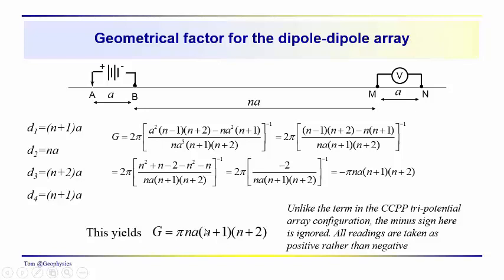And this yields a geometrical factor that you'll see in some texts. Now, we often ignore this negative sign. It was important when we were dealing with the tri-potential array configuration, but the minus sign here is ignored, so all our readings are just taken as positive rather than negative.